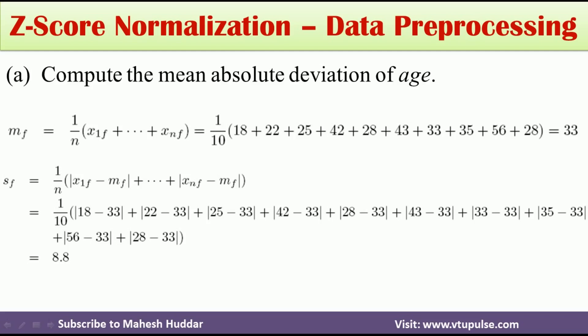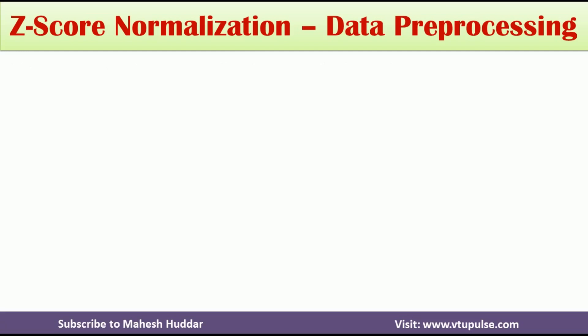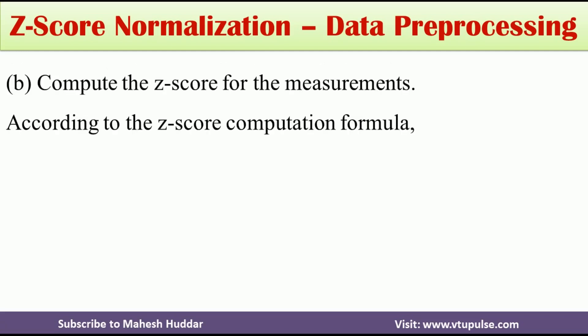This gives a mean absolute deviation equal to 8.8. So the mean absolute deviation of the age column is 8.8. Once we have both the mean and the mean absolute deviation, we can easily calculate the z-score for each and every value using the formula z_if = (x_if − mean) / MAD.